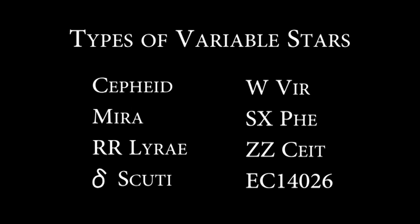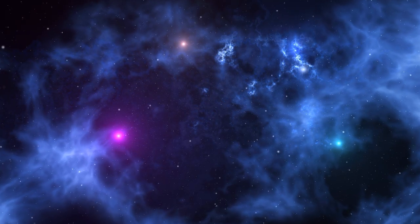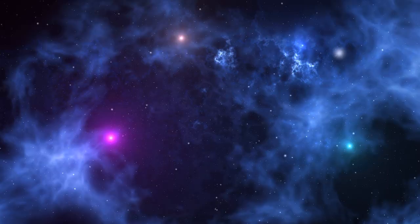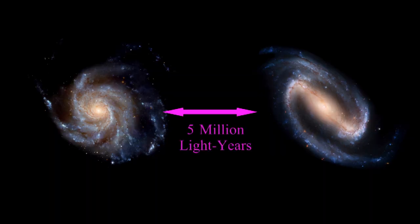And the most important type of variable star is the Cepheid variable. These stars are so important because they're the secret to measuring large distances. We use these stars to measure the distance to other galaxies.